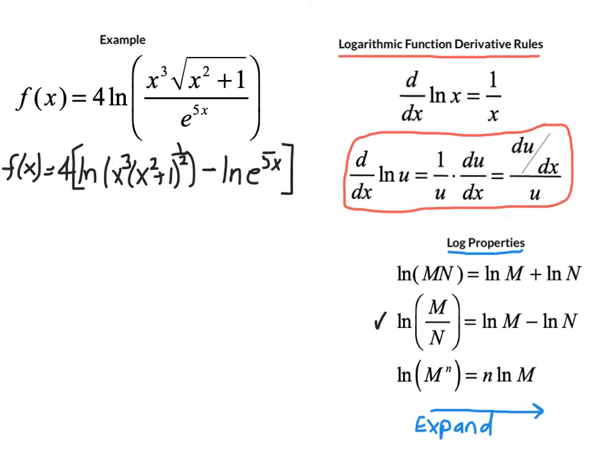Our next step on the expansion is we have two factors here, so we can use our product rule for logs. This would be 4 times the quantity natural log of x to the third plus the natural log of x squared plus 1 to the 1 half minus the natural log of e to the 5x.